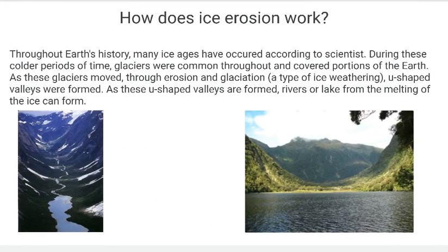So how does ice erosion work? When we talked about ice weathering in one of the previous videos, we kind of talked about glaciation. Glaciation and ice erosion go hand in hand as well. Throughout Earth's history, many ice ages have occurred according to scientists. During these colder periods, glaciers were common and covered portions of the Earth. As these glaciers moved through erosion — remember, erosion is that movement — U-shaped valleys were formed through glaciation, a type of ice weathering. And as these U-shaped valleys formed, rivers and lakes from the melting of the ice can form.